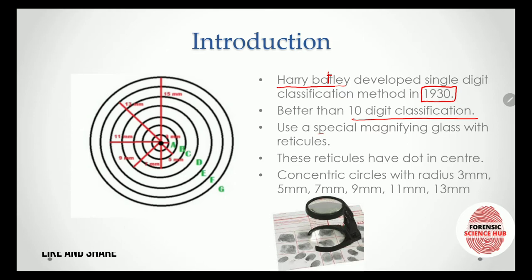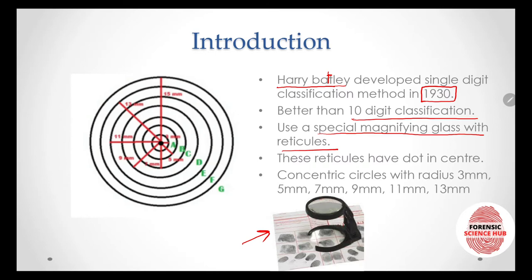This technique uses a special magnifying glass with reticules. In the picture, this is a normal magnifying glass used for visualizing prints, but for this classification we use a special type of magnifying glass that has reticules. The fingerprint is placed over the reticule surface for analysis.